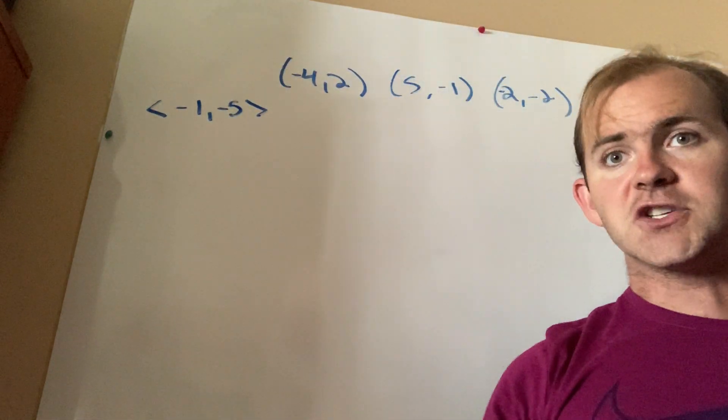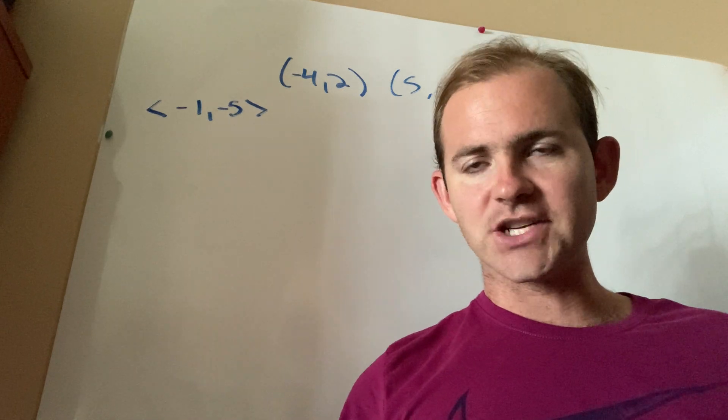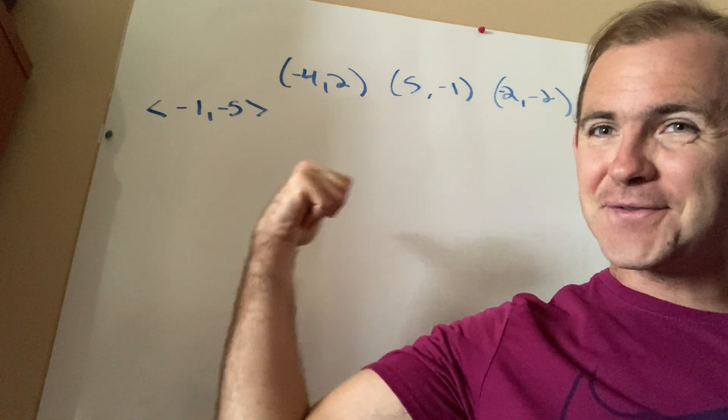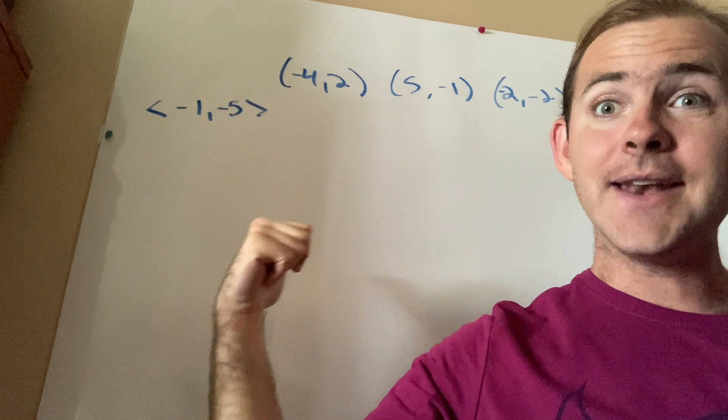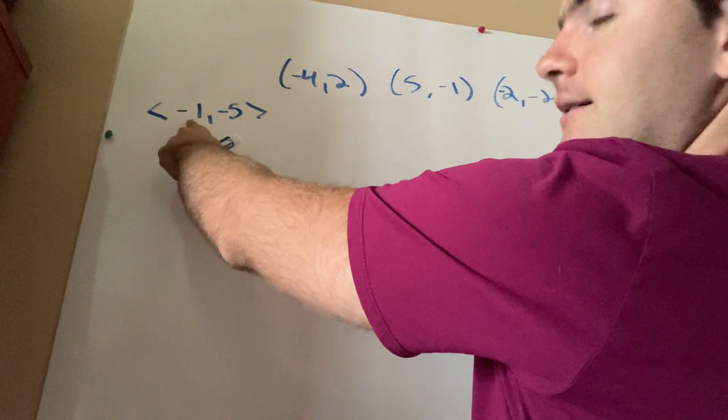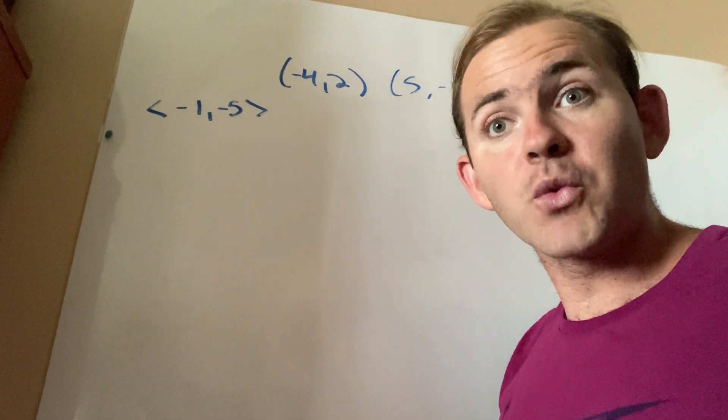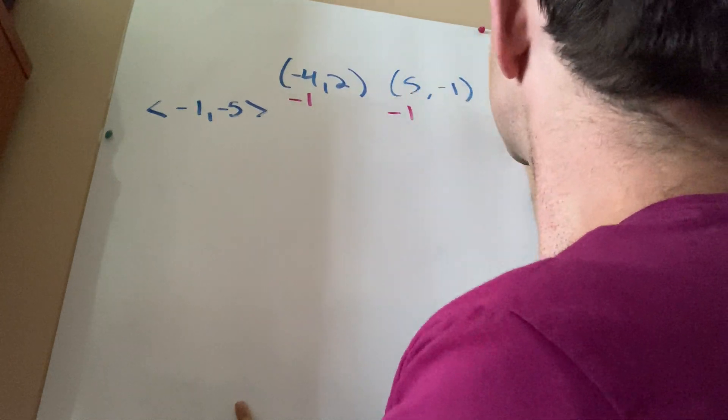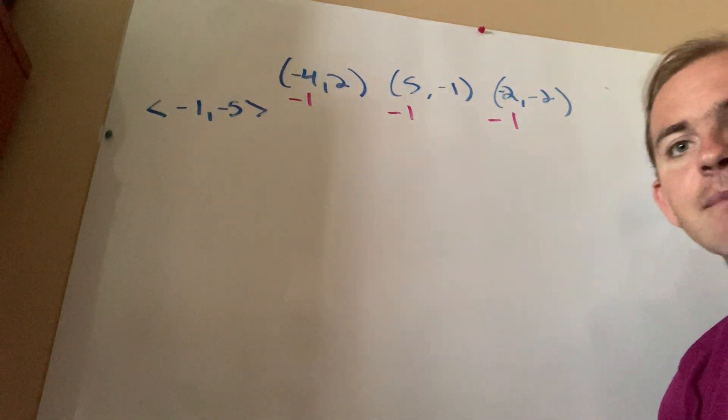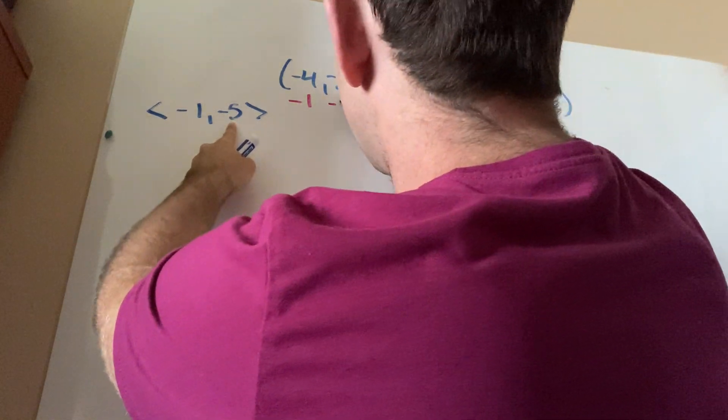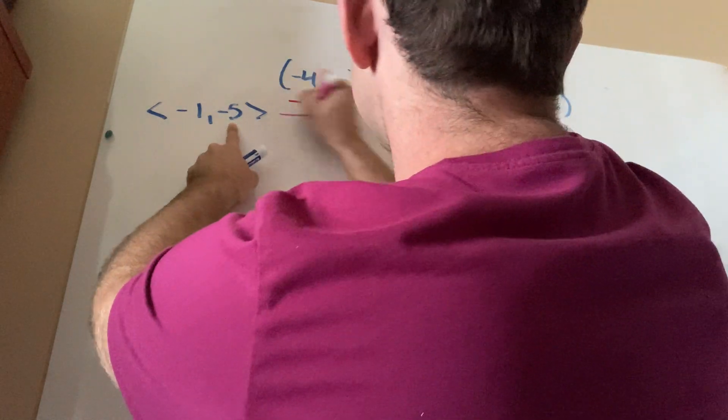So guess what that means? First of all, vectors represent translations. All I've got to do is perform that particular translation on each individual pair of coordinates. Let's see how that's going to work. The negative 1 tells me that this is really x minus 1. In other words, I'm going 1 unit to the left. So for each one of my x's, I am going to do minus 1. Similarly, this tells me that I'm going 5 units down. So for each one of the y's, I'm just going to go down 5 units.